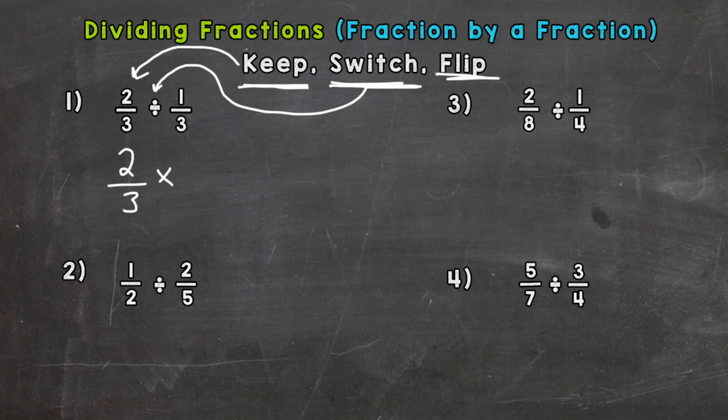And then lastly we have flip. So we're going to flip that last fraction, or sometimes you hear it called the reciprocal, and that just means flipping the fraction. So the three is now the numerator and the one is now the denominator. So three over one. So that's how we set up our problem. Now we just multiply straight across. Two times three is six and three times one is three. So our answer is six thirds or six over three.